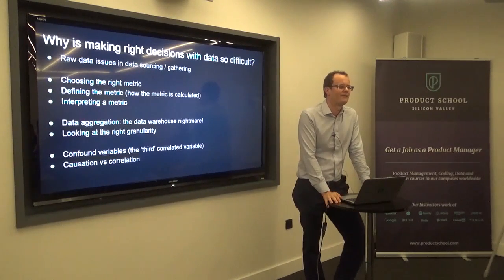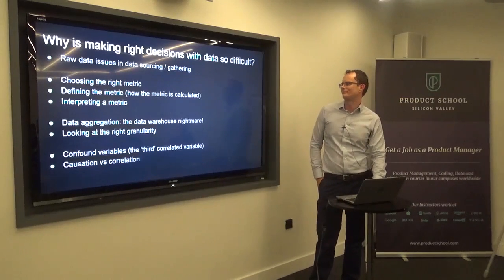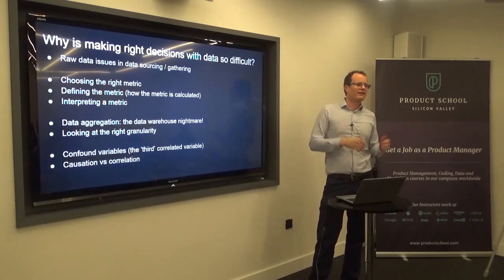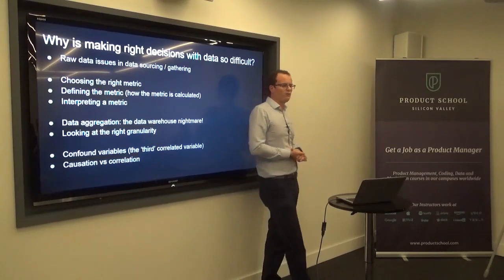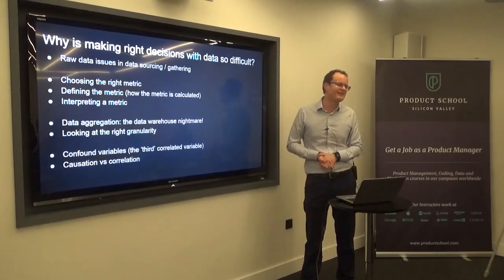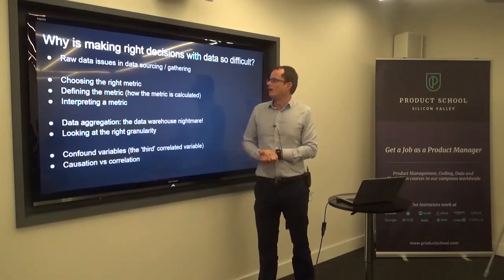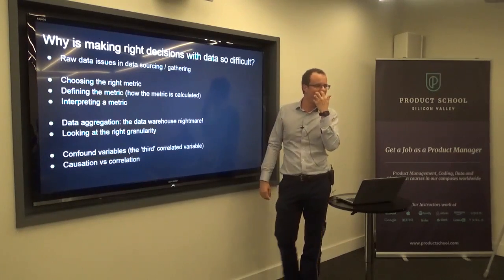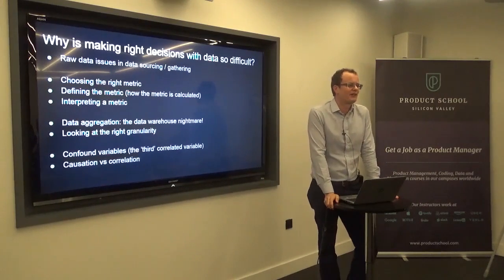An audience member asks: being quite new to all of this, do you have any recommended books or resources? The speaker responds: there is a lot of literature on individual verticals — books on statistics and machine learning explaining correlation, data warehousing literature — but he doesn't know of particular resources that take all these steps and put them together holistically, rather than looking at each area individually.